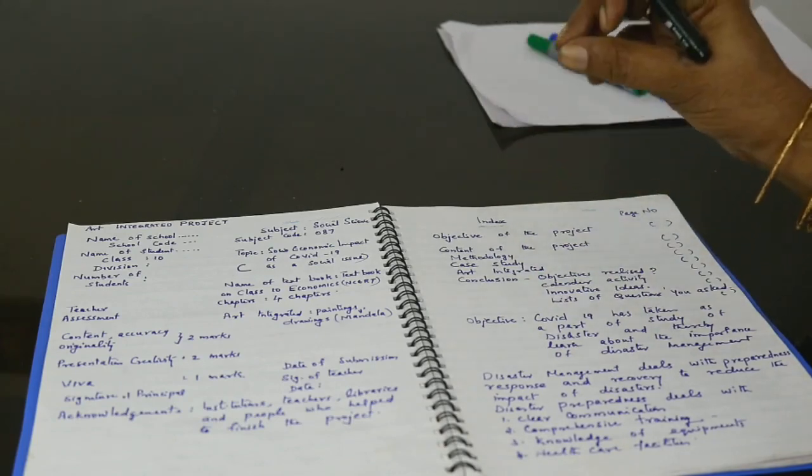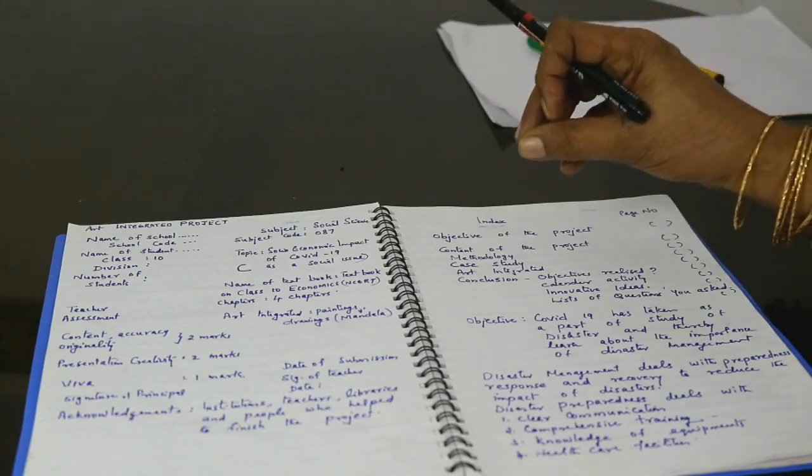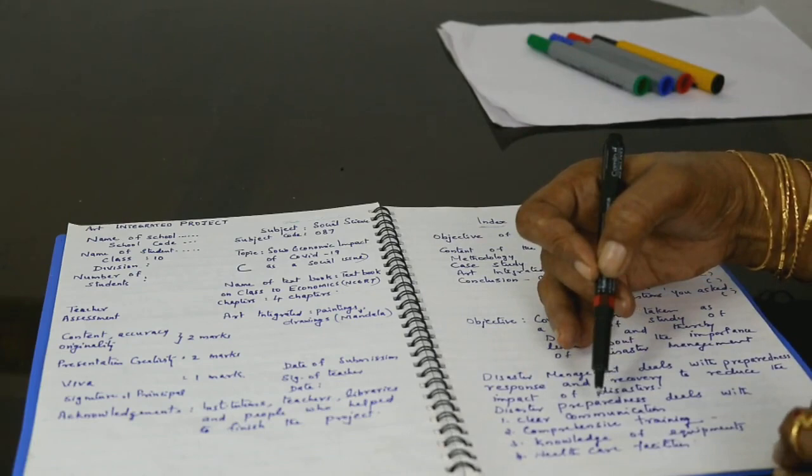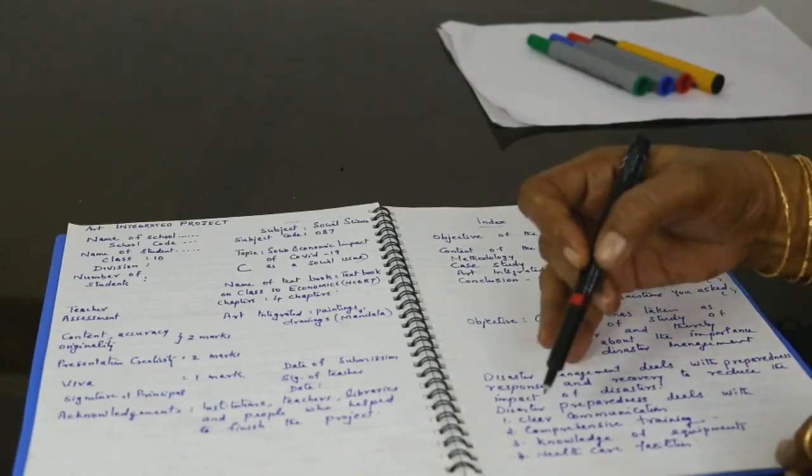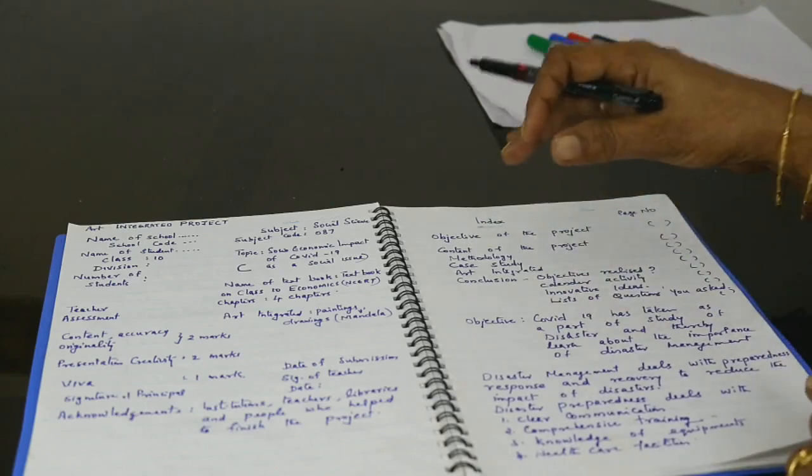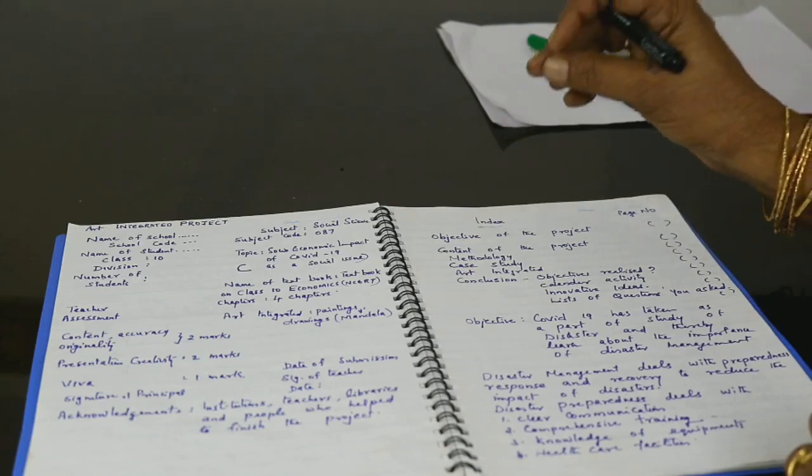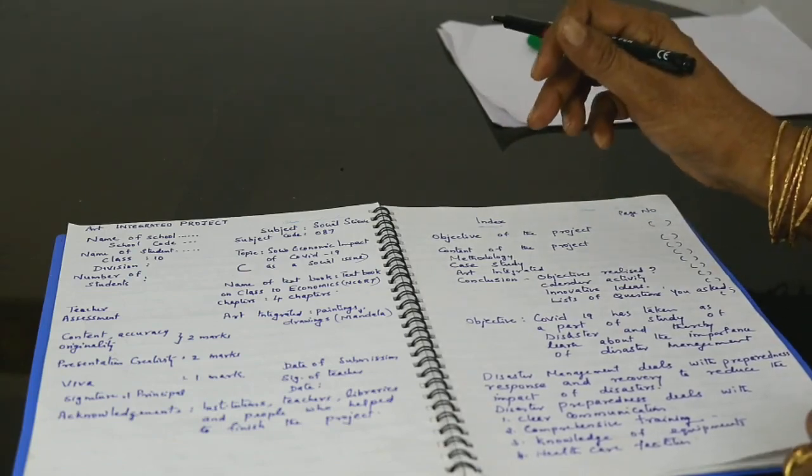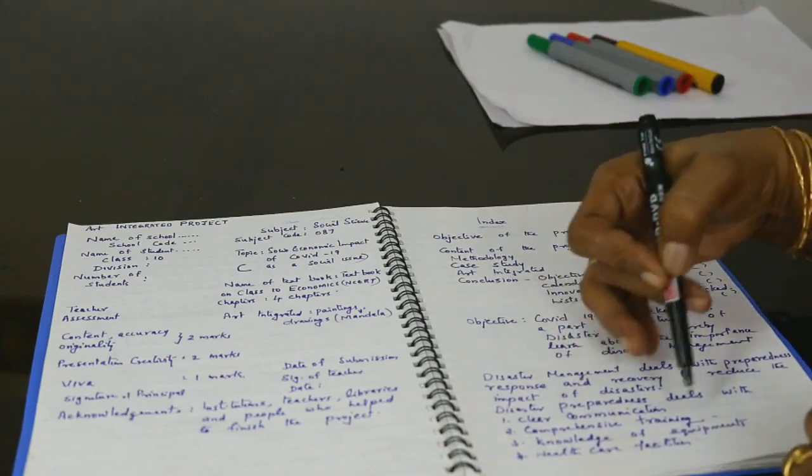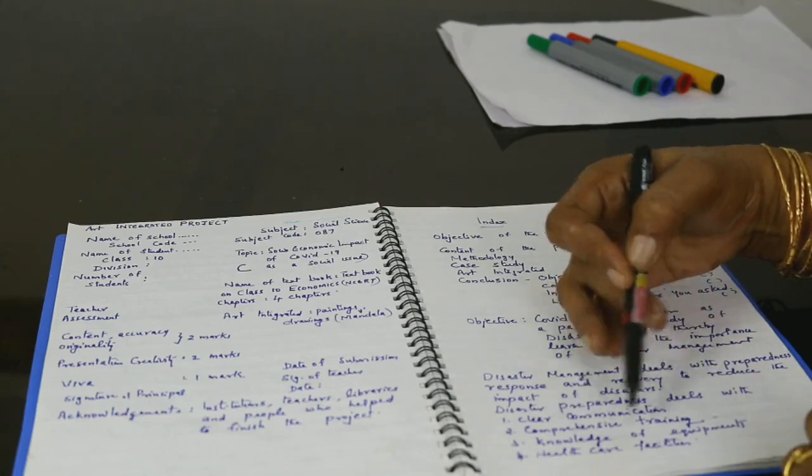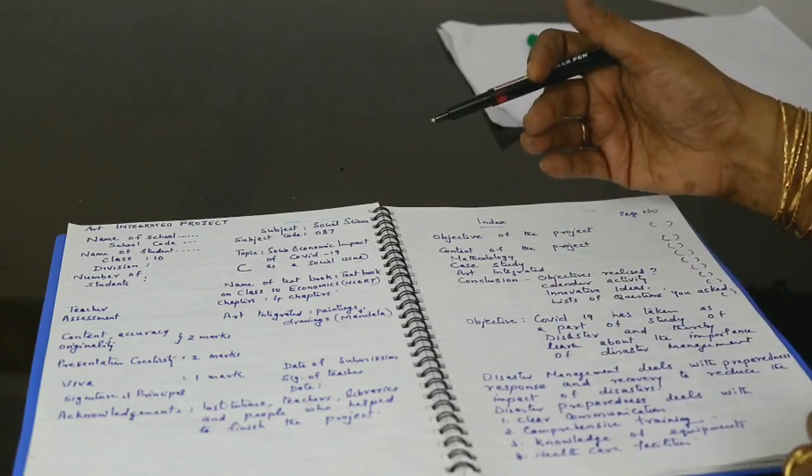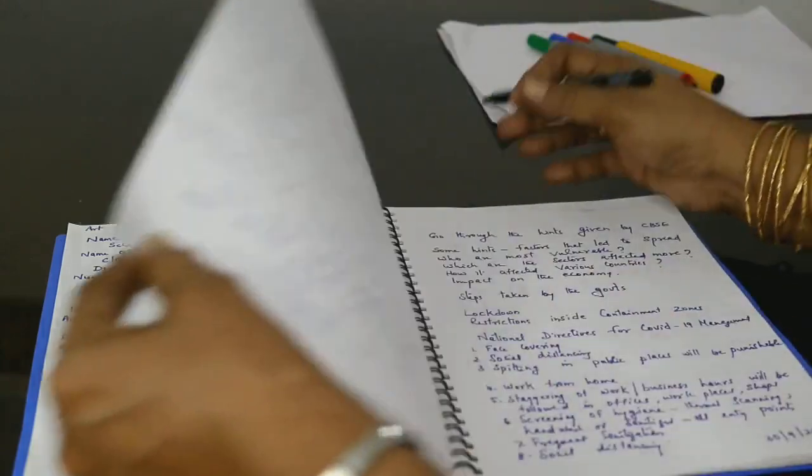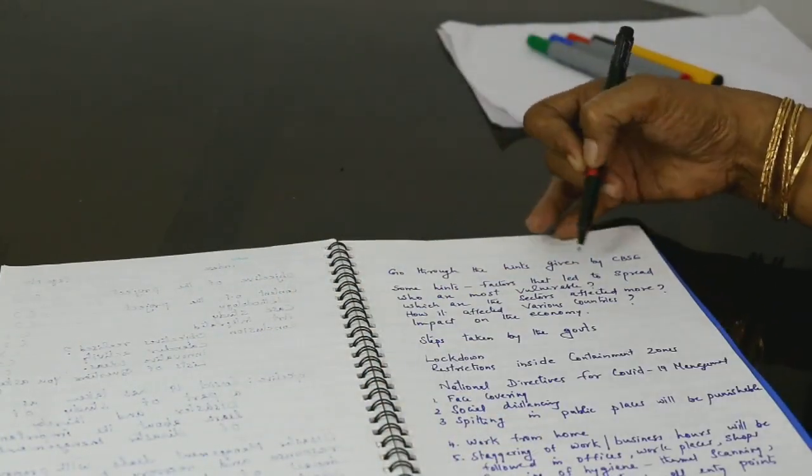We have to reduce it at the level of individual, the level of society, the level of state and the level of nation and the level of global level. For that purpose, we should have clear communication with the people. What is happening? What you should do? Second one, comprehensive training. Who are the people associated with that? They should be given proper training. In the case of COVID-19, it is along with the people who are working in the health care system. Hospitals, nurse, ambulance, drivers, like there are a lot of people are associated with that. Then knowledge of equipments. The knowledge of equipments means what are the equipments we needed to solve this problem. Then health care facilities. What are the health care facilities we are providing?